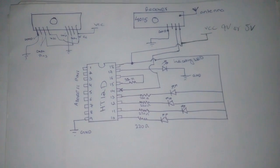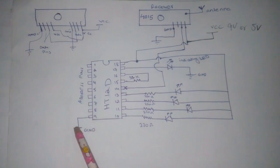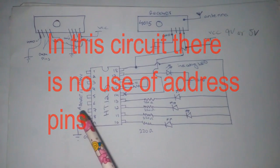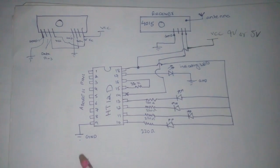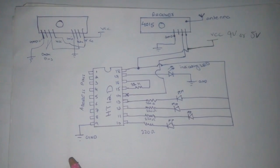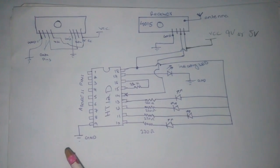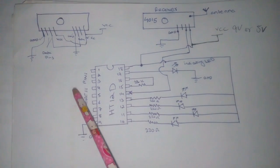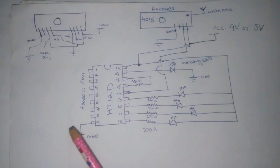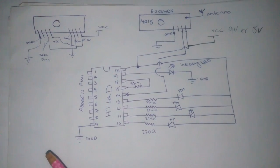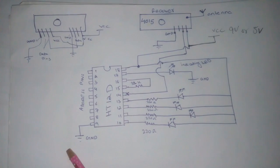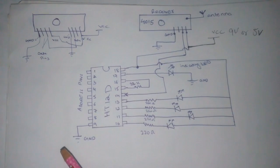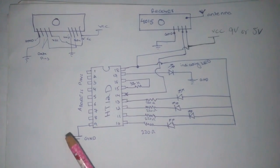Now let me tell you what is the purpose of the address pins. There are many transmitters and receivers around us, so there is a possibility that the frequency of our module may match with another module. For this reason, we use DIP switches. In the DIP switches, for example, we open 2 switches and close 3 switches at the transmitter part for uniqueness, and we do the same thing at the receiver part. That's why our module's frequency would not match with any other transmitter module.